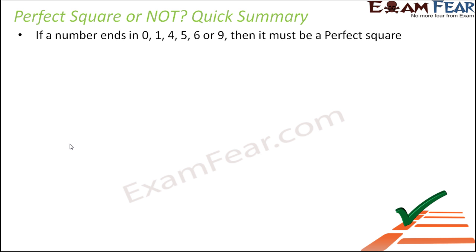First thing is, if the number ends in 0, 1, 4, 5, 6, or 9, then it must be a perfect square. This is one very easy way of determining whether a number is a perfect square or not. So first look at these digits.